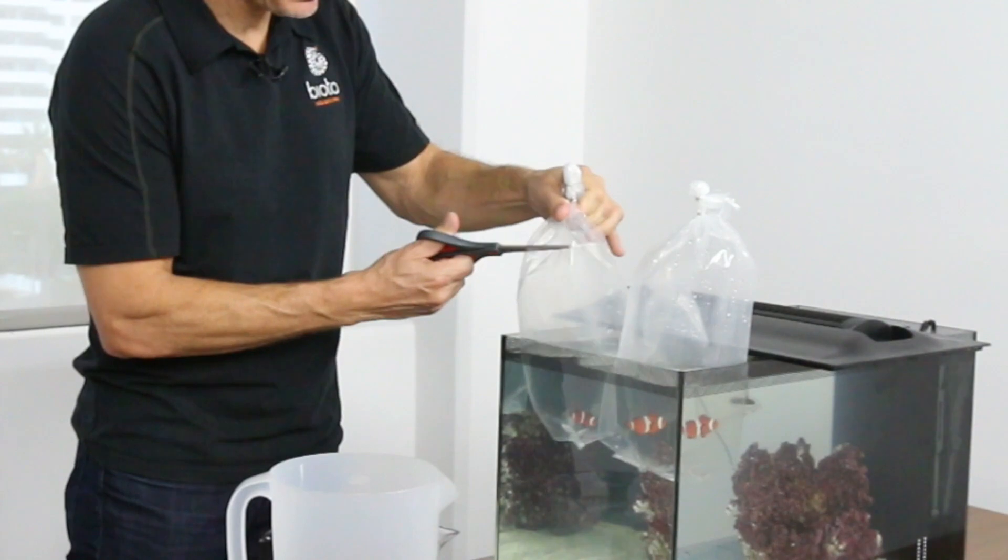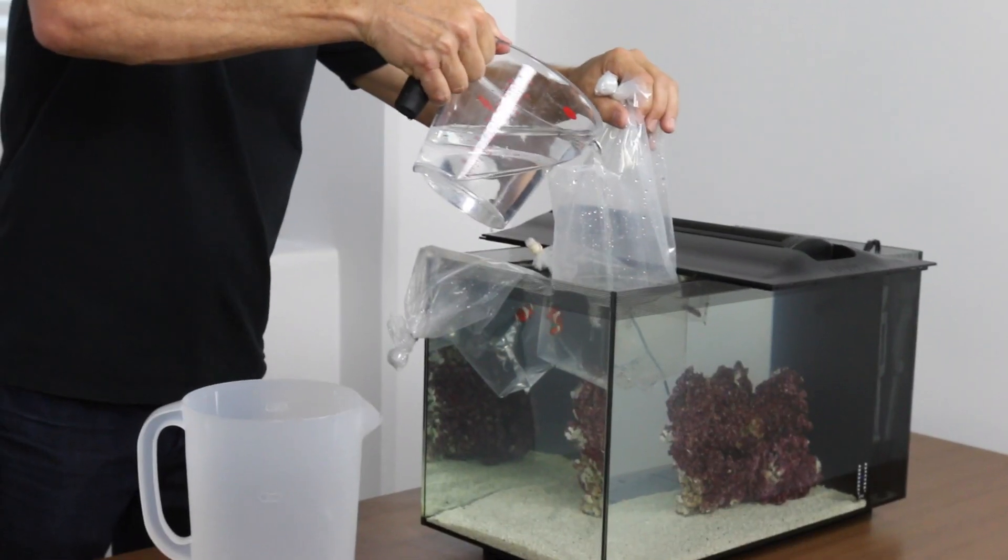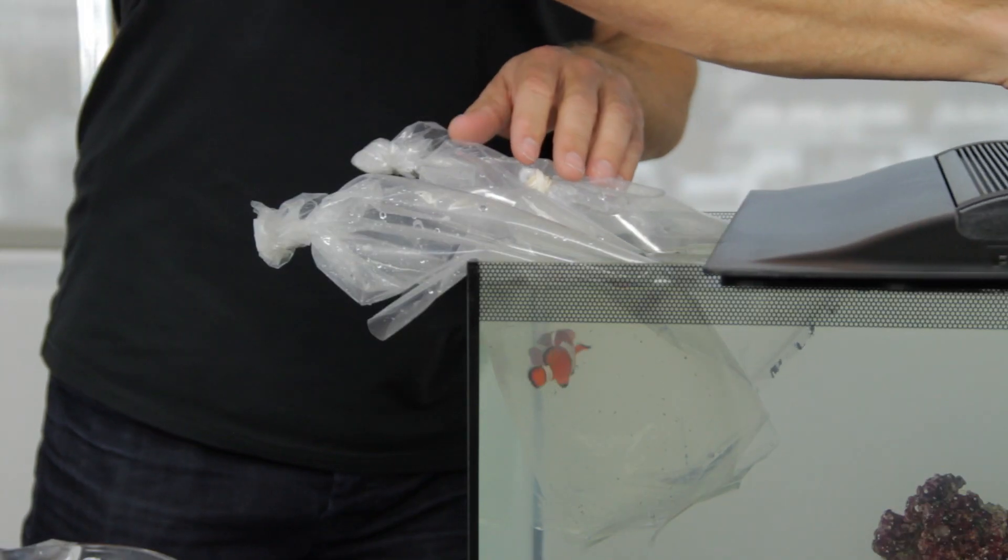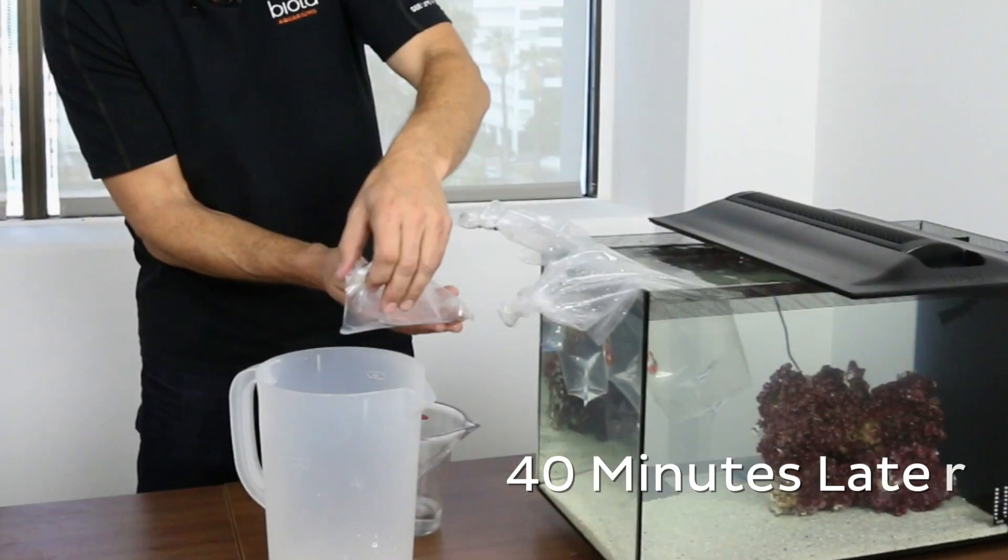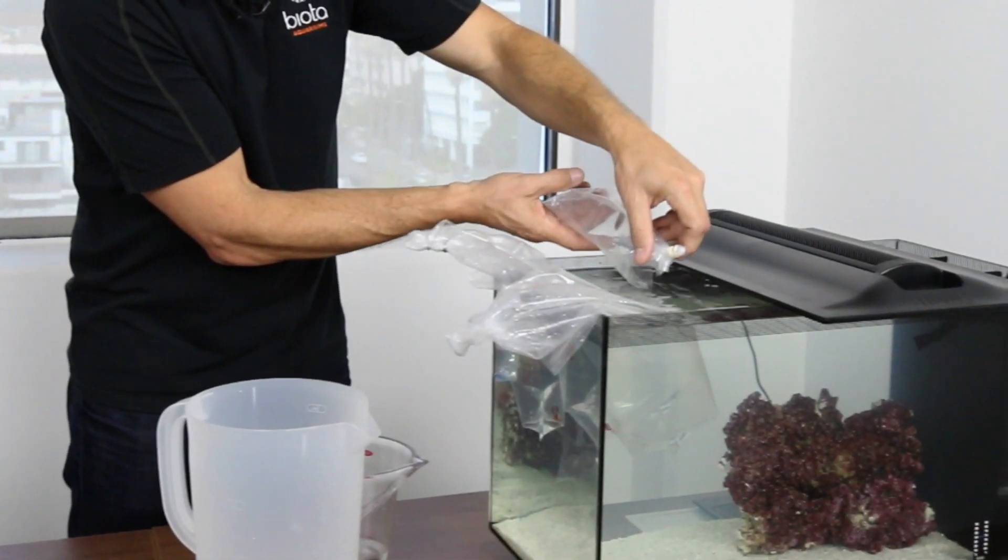Make an incision at the top of each bag and pour some water from the tank into the bags. After 40 minutes of acclimation, pour the water from the bags into an extra container and release the fish gently into the water.